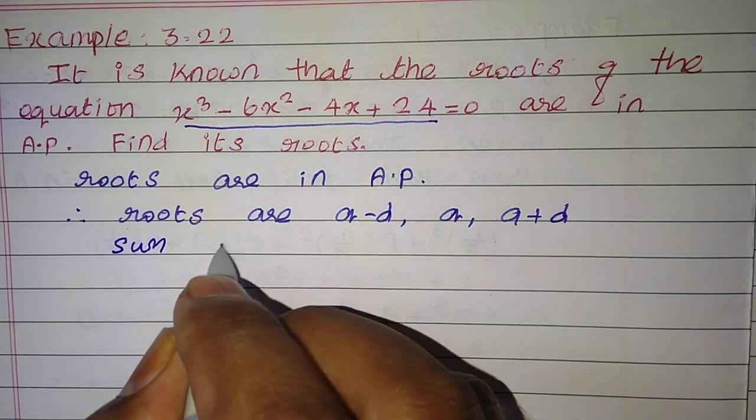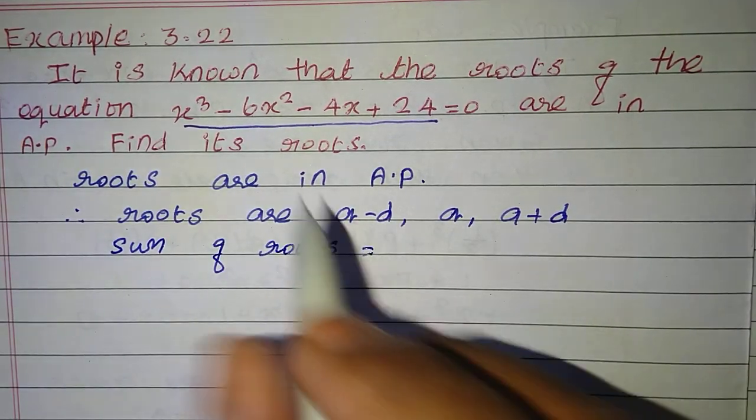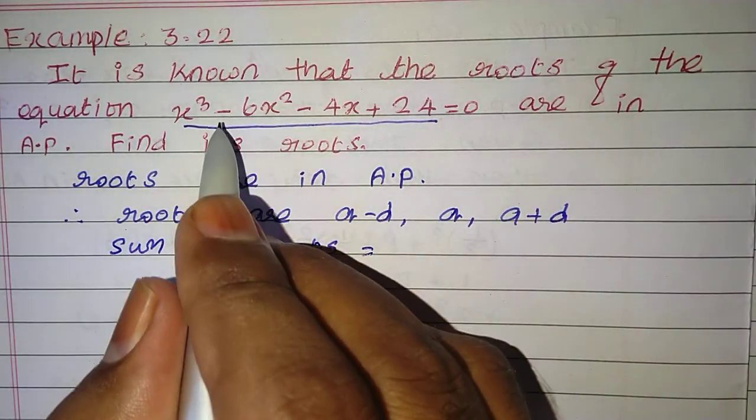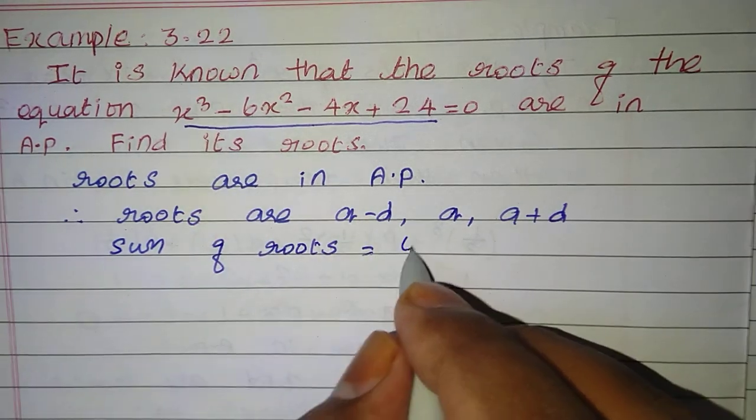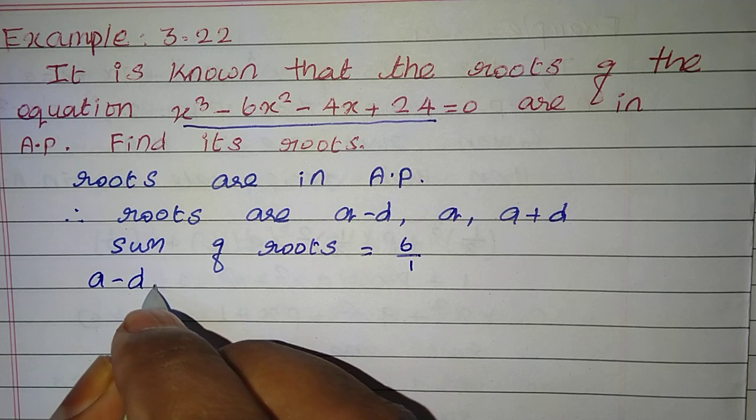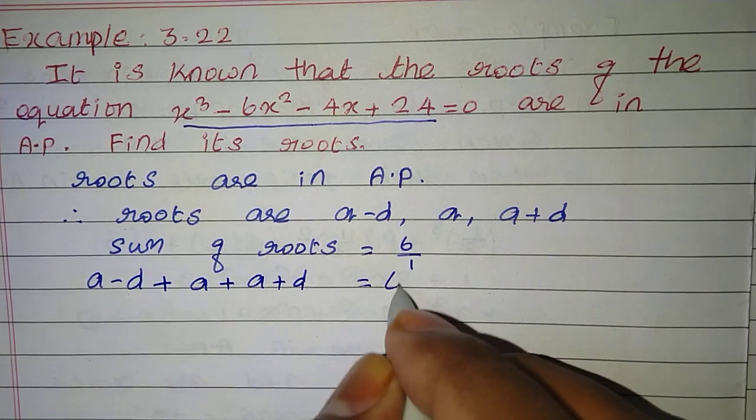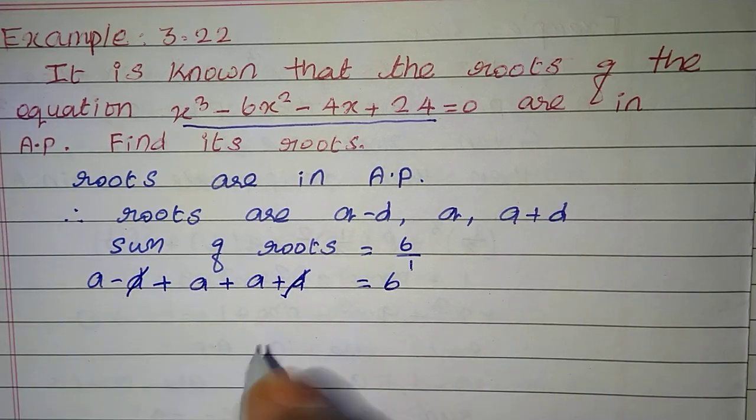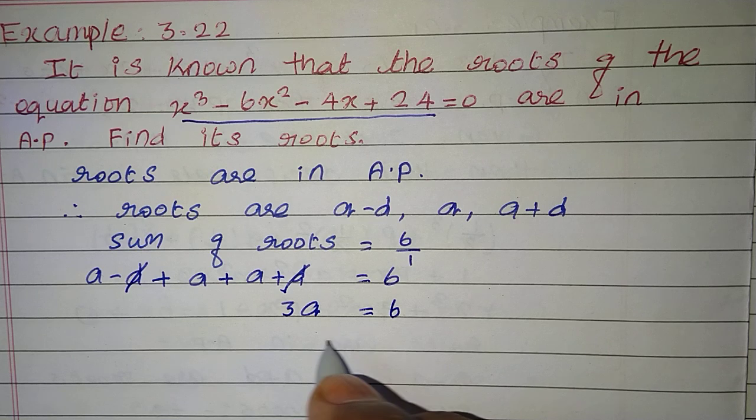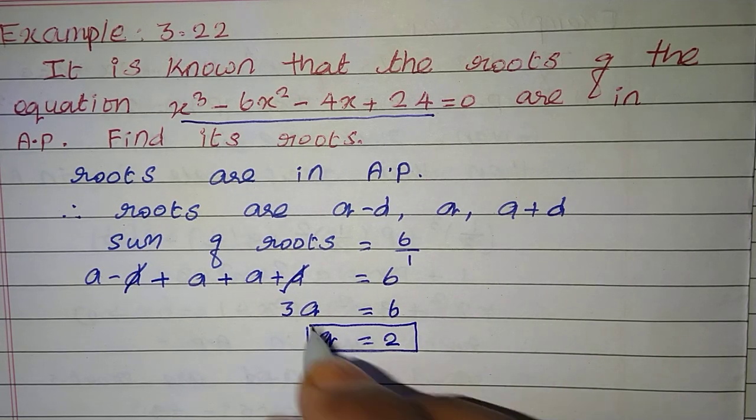Sum of roots equals minus coefficient of x square by coefficient of x cube. So 3a equal to 6, a equal to 6 by 3, which is 2. So this is one root.